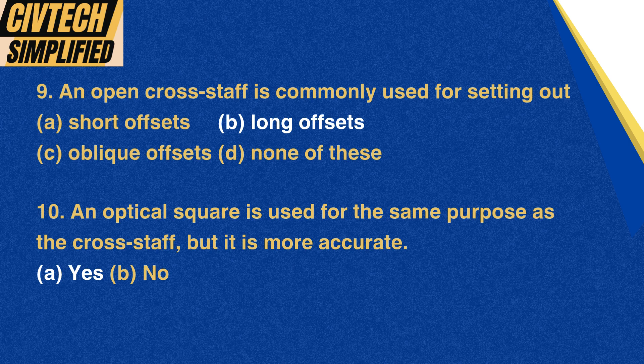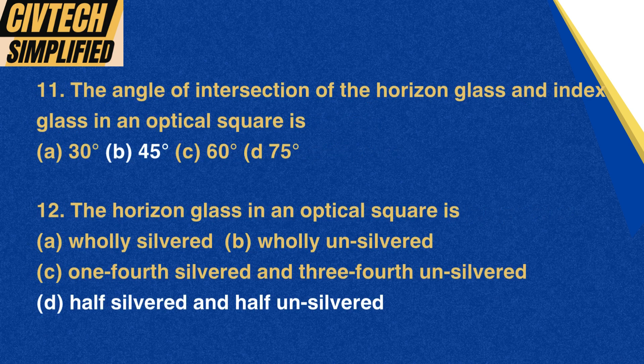Question 10: An optical square is used for the same purpose as the cross staff, but it is more accurate. A. Yes, B. No. Correct option: A. Yes. Question 11: The angle of intersection of the horizon glass and index glass in an optical square is: A. 30 degrees, B. 45 degrees, C. 60 degrees, D. 75 degrees. Correct option: B. 45 degrees.